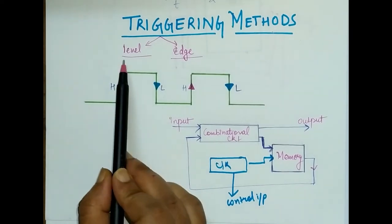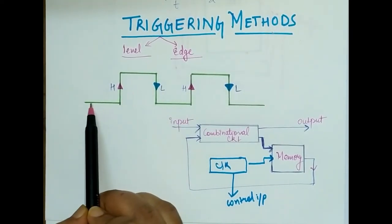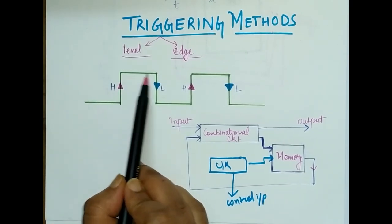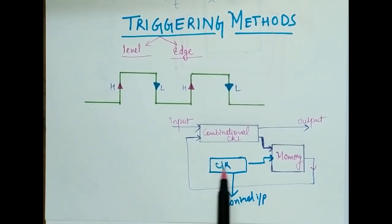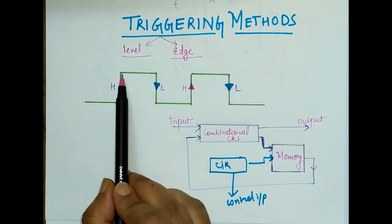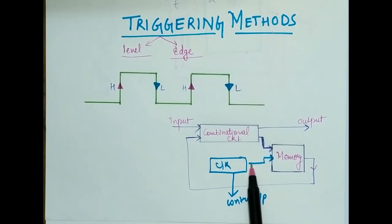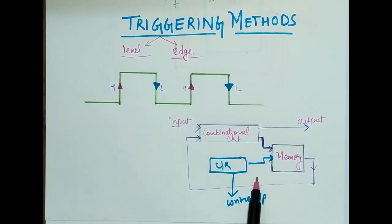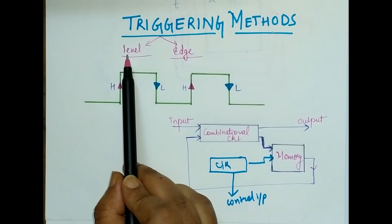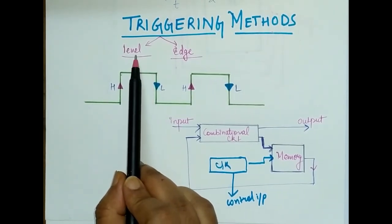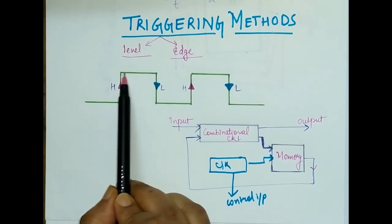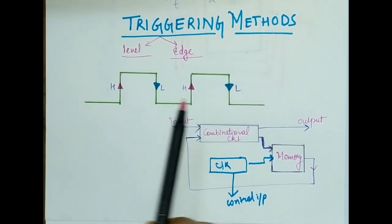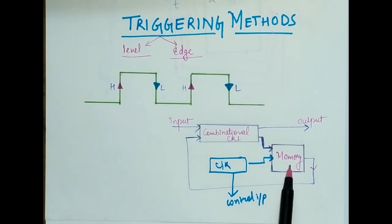Let us see what level triggering is. This is a clock signal with low and high levels. Suppose the clock signal works in such a way that only when we have a high level will the memory circuit be triggered and work as a sequential circuit — that is called level triggering. So when the clock signal is in the high duration, only then will the memory circuit be triggered.